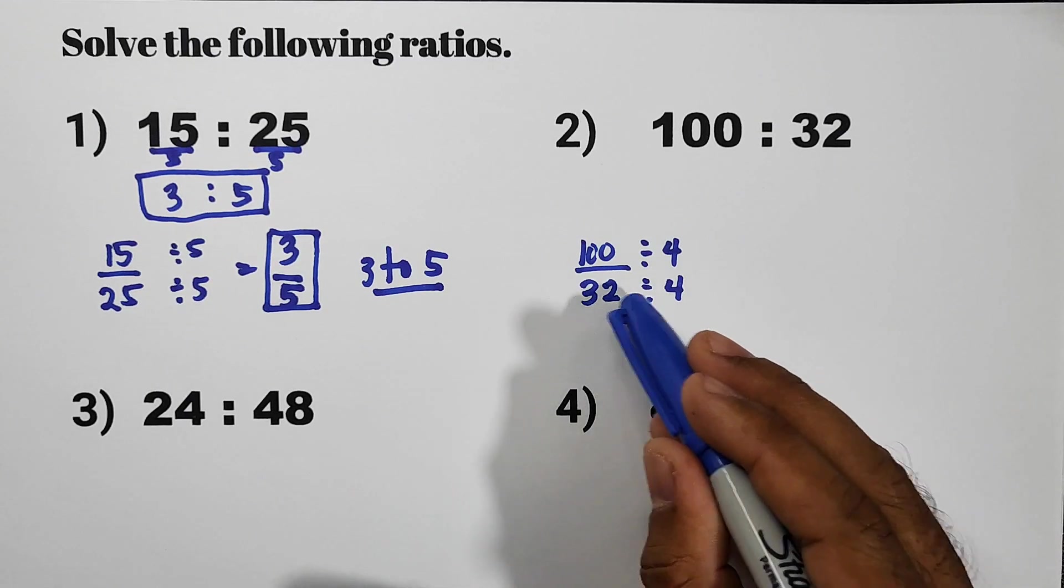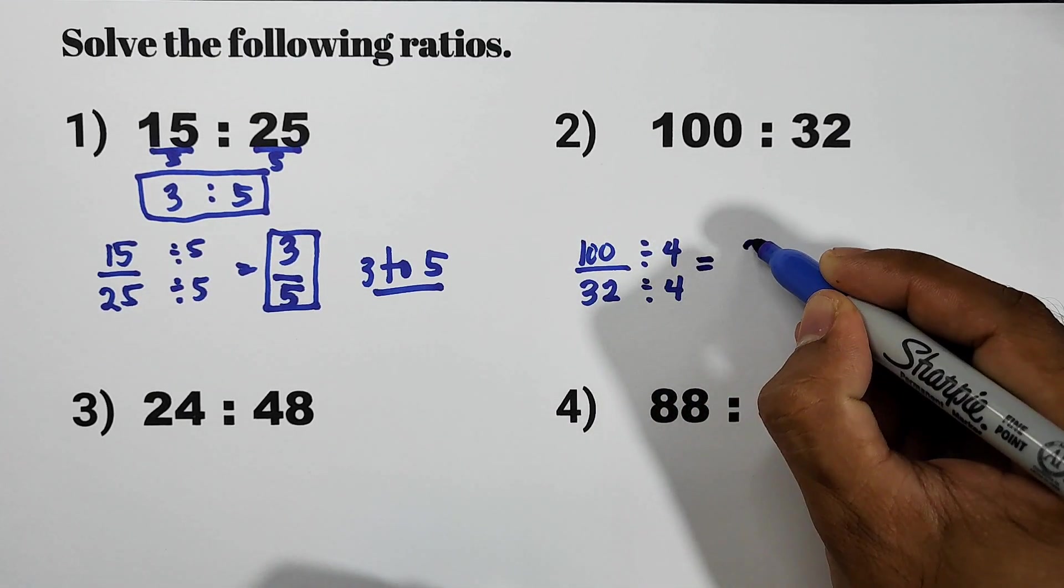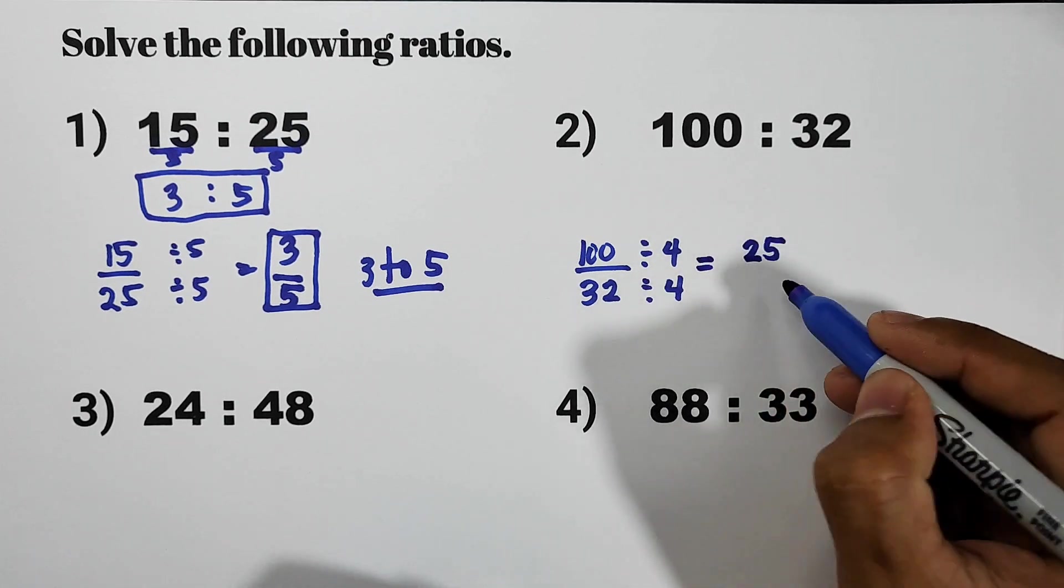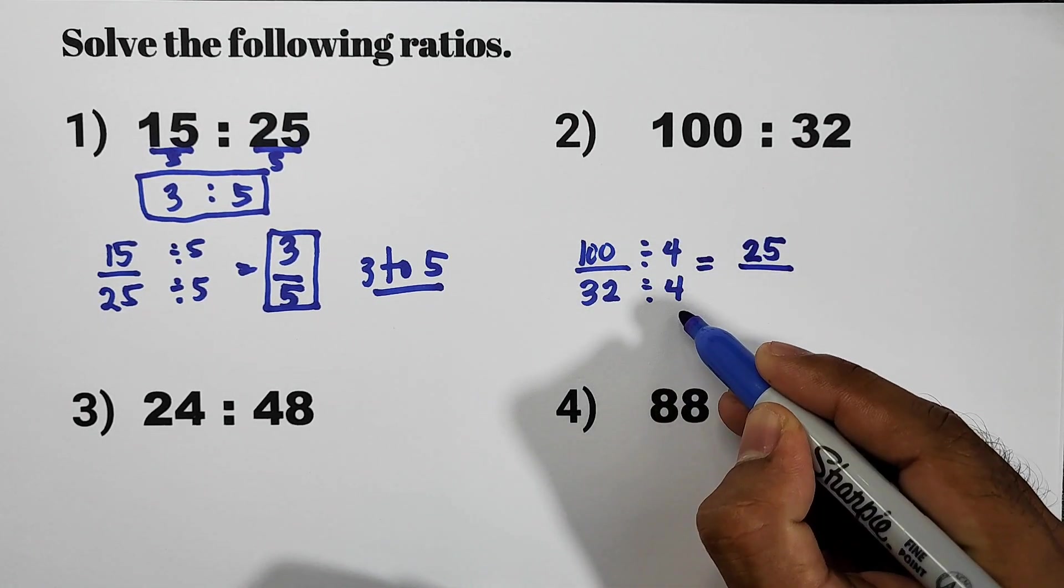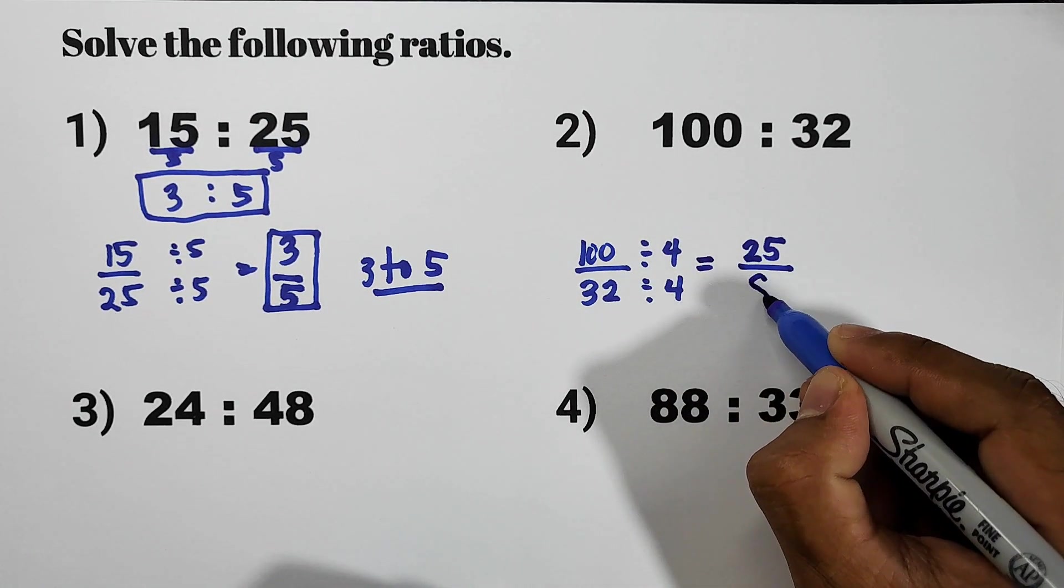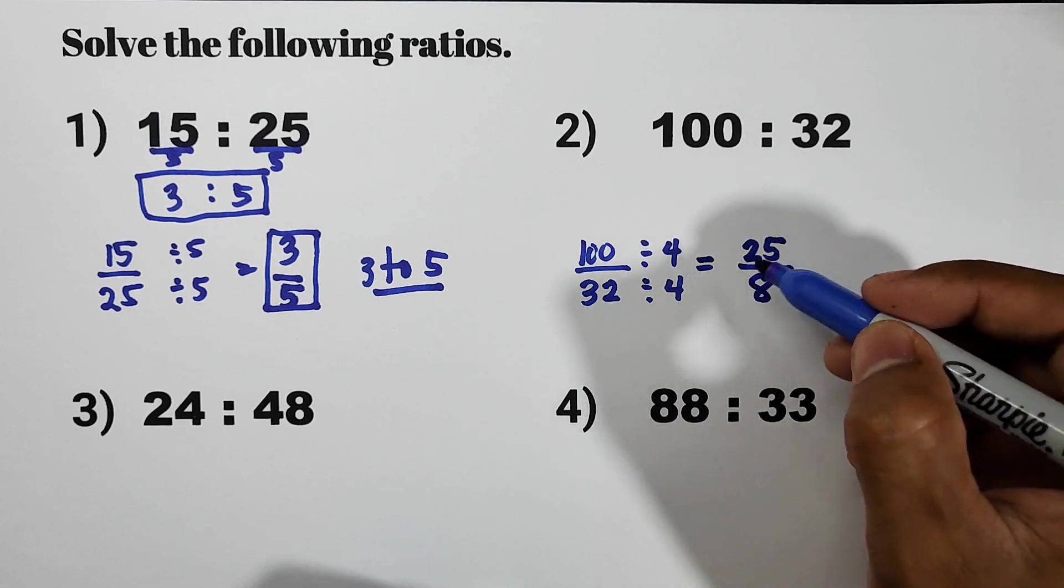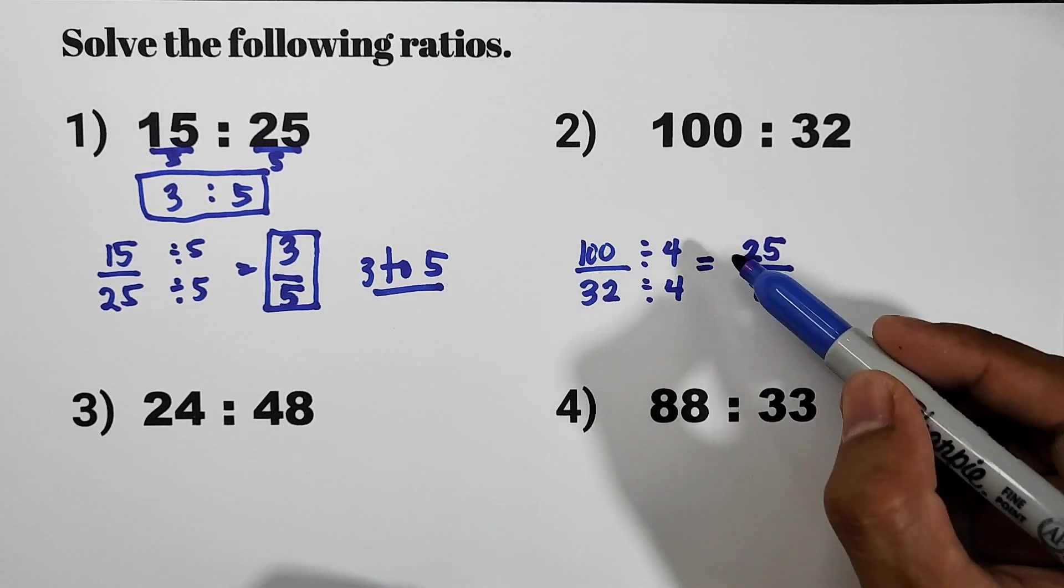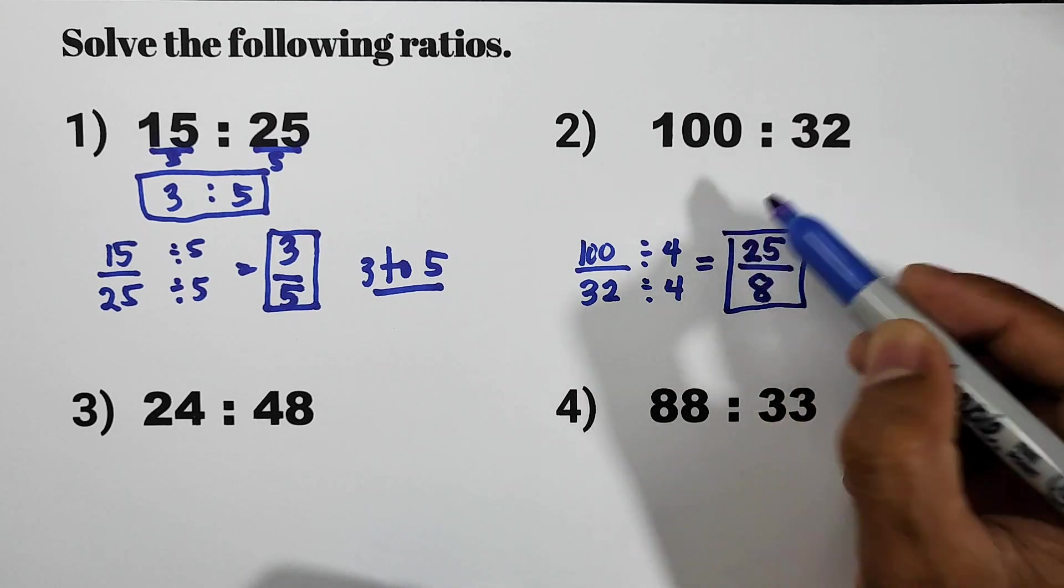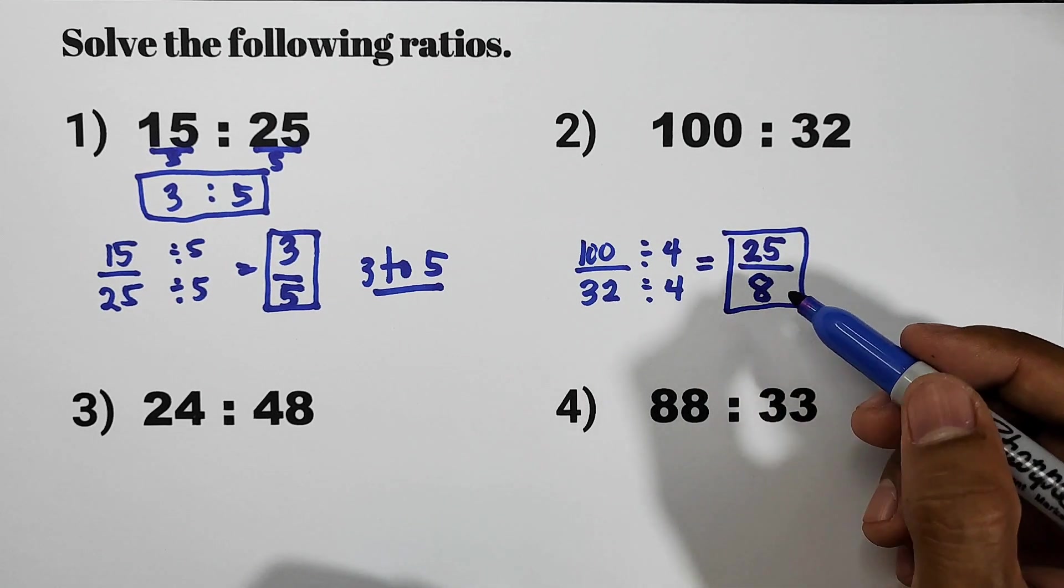So divide the numerator and denominator by 4. 100 divided by 4, that is equal to 25. And then 32 divided by 4, that is equal to 8. So the simplest form of 100 over 32 is 25 over 8.